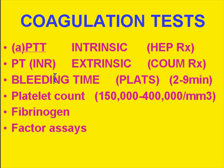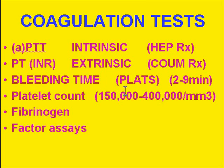You can also measure fibrinogen — the second-to-last end product of coagulation — which can be consumed in many hemorrhagic processes. And if needed, you can measure almost any specific coagulation factor with a factor assay. In clinical medicine, however, you're really going to be using your APTT, your INR, your platelet count, and your bleeding time for most common coagulation tests.